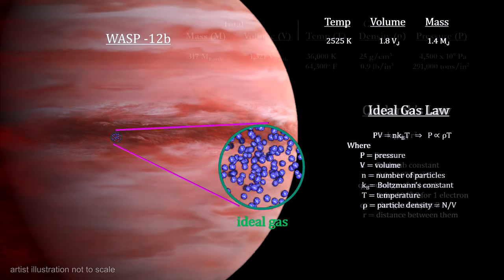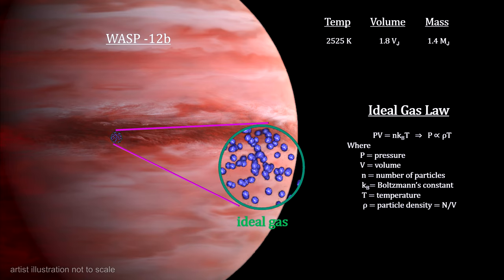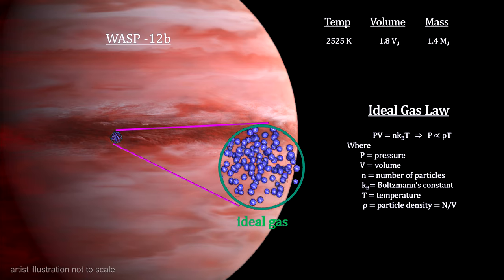Now let's add enough mass to get to the size of the exoplanet WASP-12b. It's the largest exoplanet discovered to date.